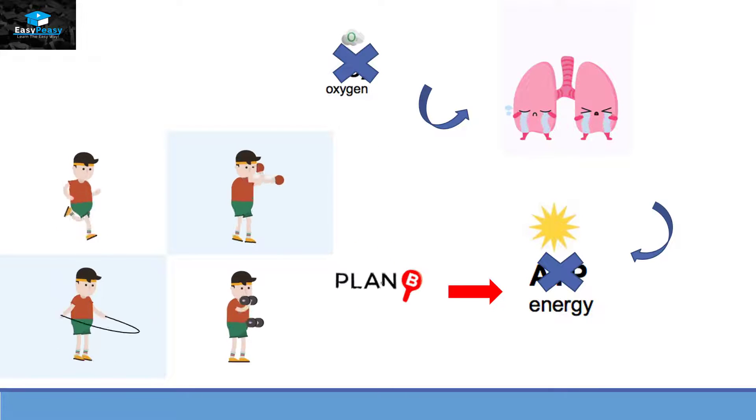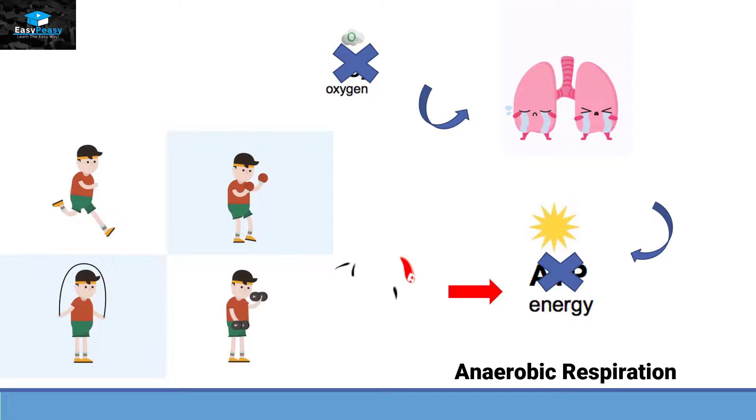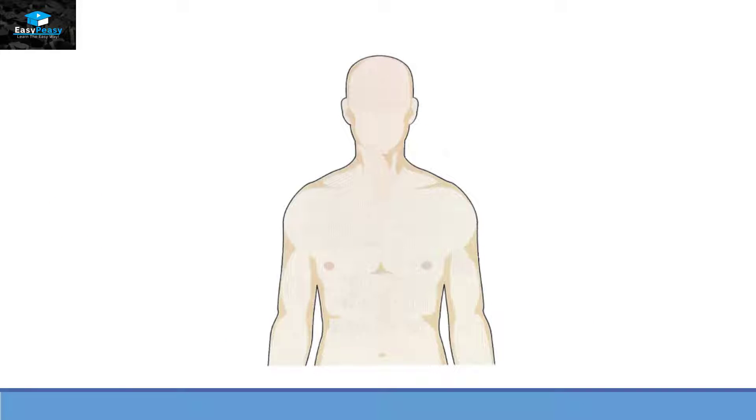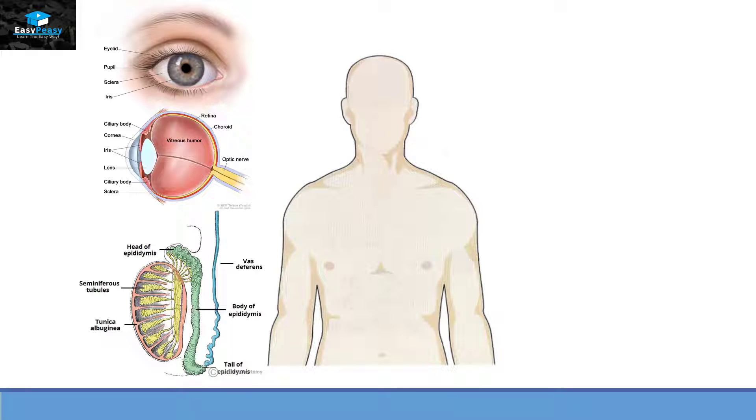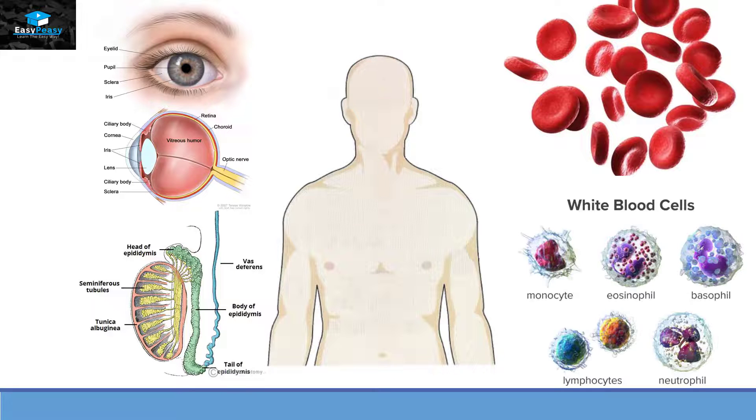Even inside our body there are some organelles that always perform anaerobic respiration. For example, the lens and cornea of the eye, the testis present in male organisms, red blood cells, and white blood cells, as they don't even have mitochondria in their cell. So all these organelles perform anaerobic respiration even if oxygen is available.